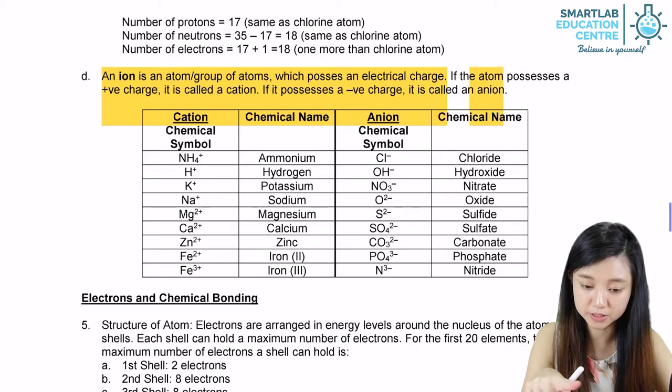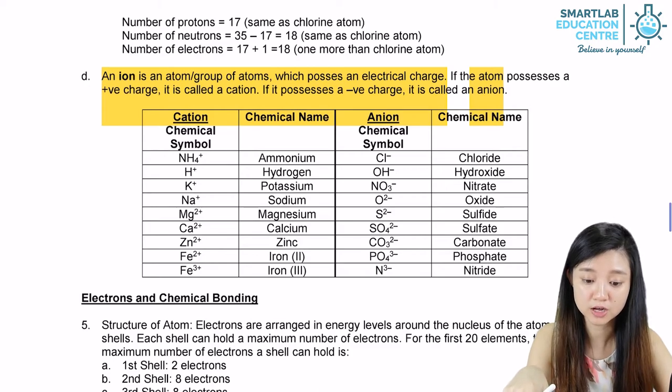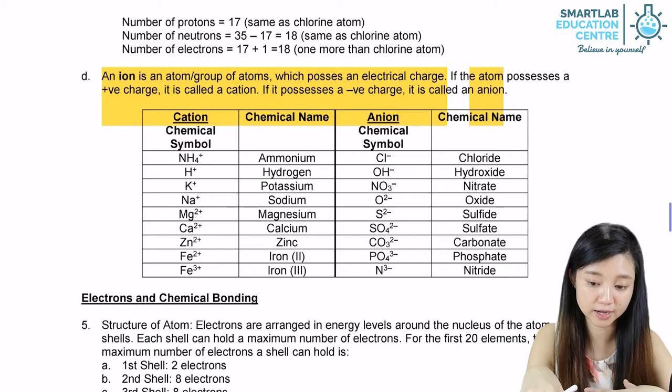The table below shows you the different examples of cations and anions.